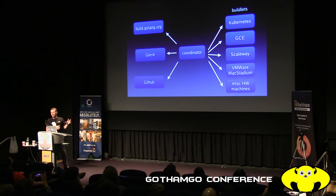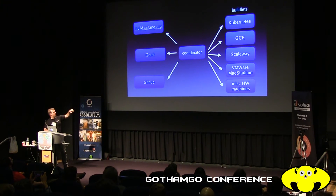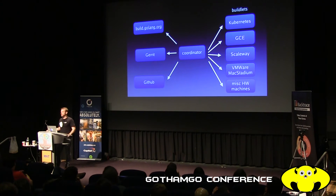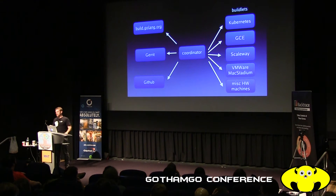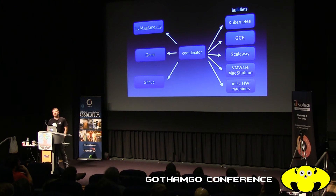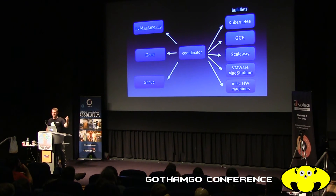The overall build system has Gerrit, GitHub, and build.golang.org tracking what needs to be tested, syncing state between Gerrit and GitHub. We create new Kubernetes containers for Linux, or VMs for Windows and BSDs. For Macs, we use VMware to run macOS on macOS — because you can only legally virtualize macOS on macOS — so we have a bunch of Mac hosts to create new Mac VMs on demand. We also have 50 ARM machines on Scaleway in Paris.